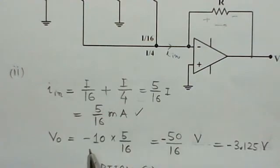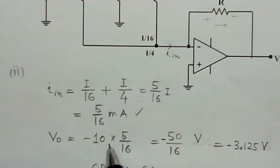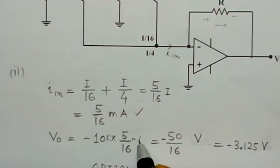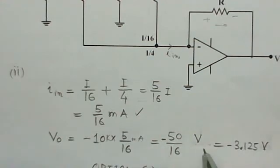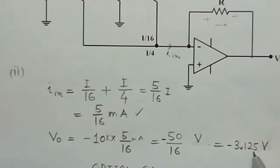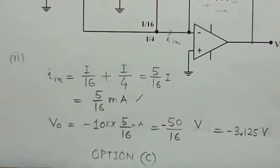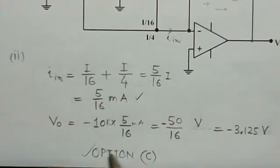V0 equals minus 10k multiplied by the current 5/16 milliampere, which gives minus 50 by 16 volts. Simplifying, this becomes minus 3.125 volts. The negative sign comes from the fact that this is an inverting amplifier configuration. This corresponds to option C as per the given answer choices.